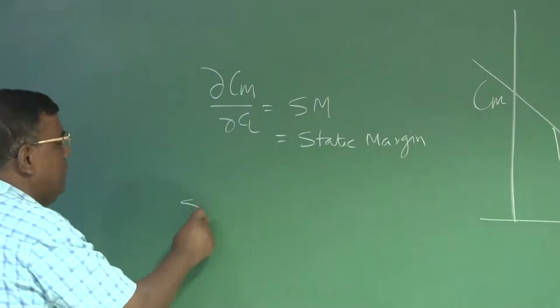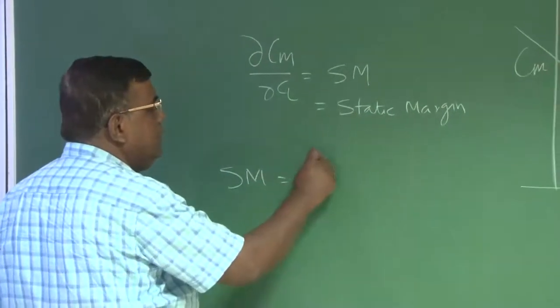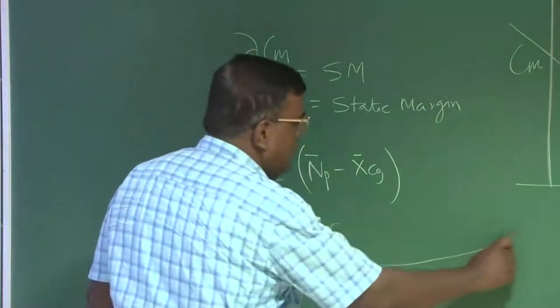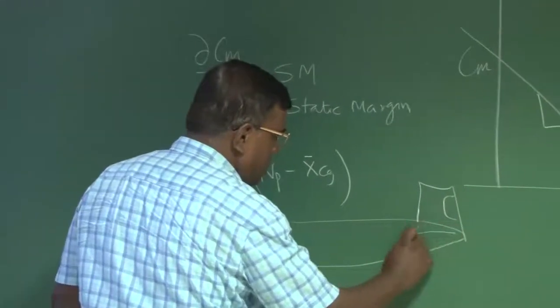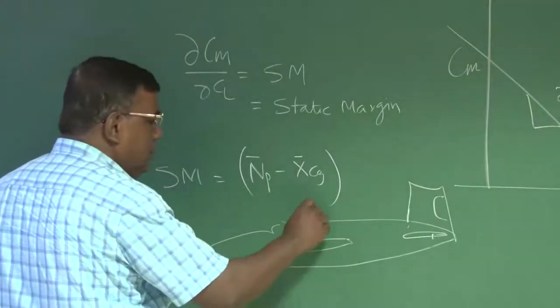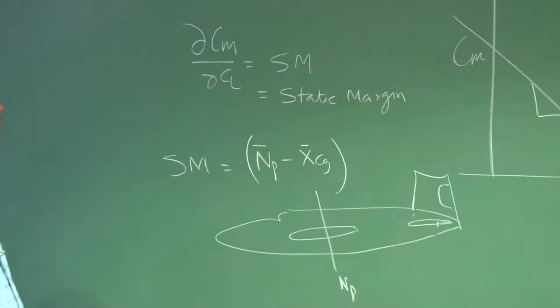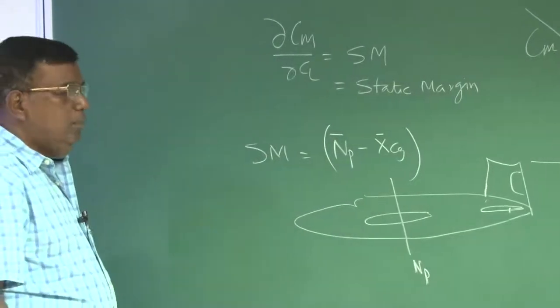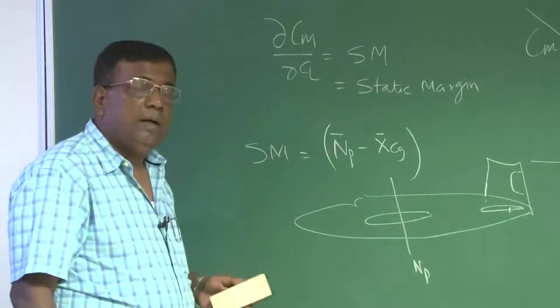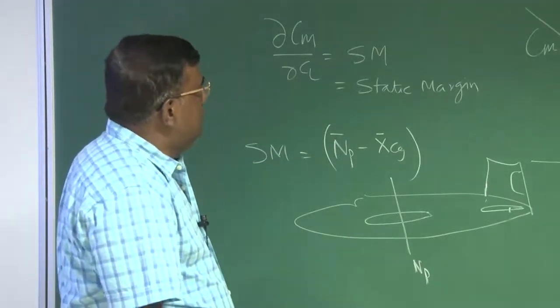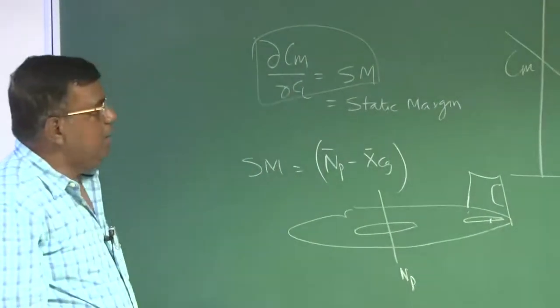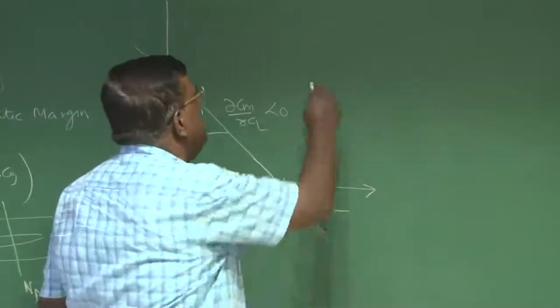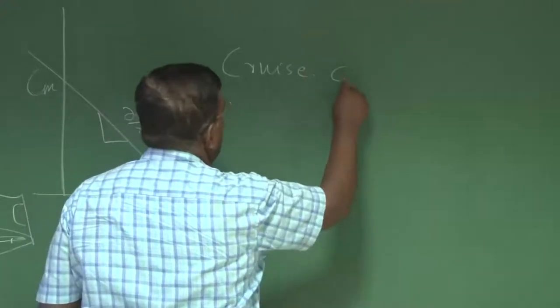What was static margin? Static margin was defined as a distance between neutral point and CG, non-dimensionalized. If I have an airplane and somewhere here is neutral point, the definition of neutral point was neutral point is that CG location at which dCm by dCl becomes 0, or more classically, neutral point is that CG location at which the aircraft becomes neutrally stable. This is an approximate expression but very useful, and see how the designer will exploit this understanding.